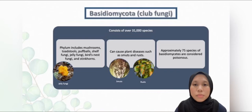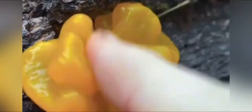Now, let's move on to the next fungi phylum, which is Basidiomycota. This phylum, or club fungi, consists of over 31,000 species, including mushrooms, toadstools, puffballs, shelf fungi, jelly fungi, bird's nest fungi, and stinkhorns. It can also cause plant diseases such as smuts and rusts. For your information, approximately 75 species of Basidiomycetes are considered poisonous.